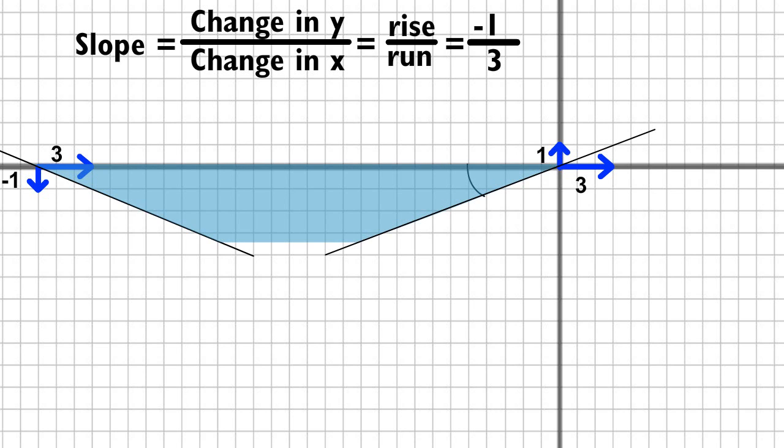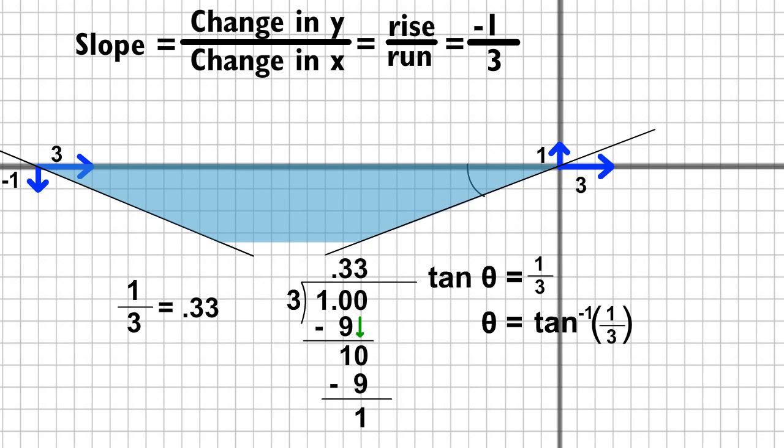To find the degrees of a one-third slope, you divide one by three to get point thirty-three. You then press second, tan, on your calculator, then enter point thirty-three, and press enter again to see that the one-third slope equals eighteen degrees.